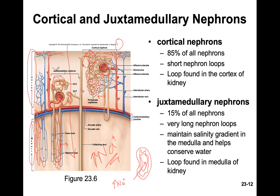The answer is nephron number two — the juxtamedullary nephron. Because its loop of Henle goes deeper into the kidney where there's more salt, and water always follows salt, water inside this loop undergoes osmosis following the salt concentration gradient. There's far more salt in the medulla than the cortex, so there's much more reabsorption of water in this region. The responsibility of juxtamedullary nephrons is to reabsorb more water back into the body, leaving behind a higher urine concentration.